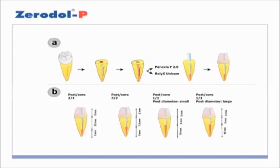Resistance refers to the ability of the post and tooth to withstand lateral and rotational forces. It is influenced by the remaining tooth structure, the post's length and rigidity, the presence of anti-rotation features, and the presence of a ferrule.